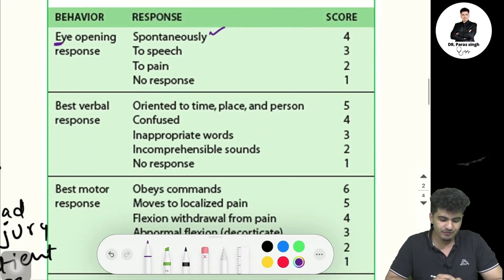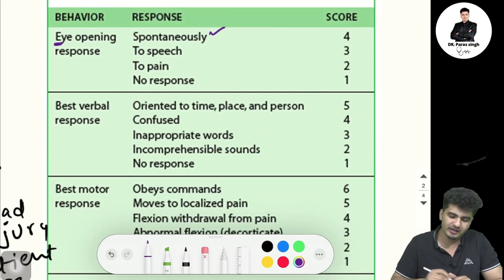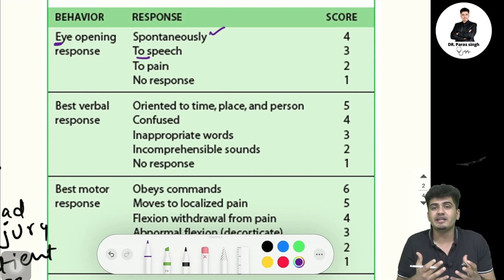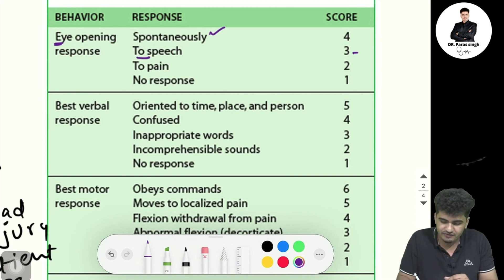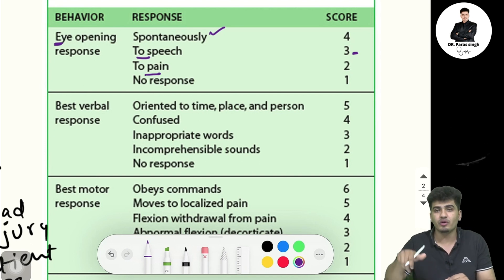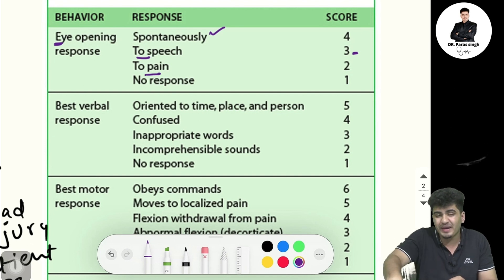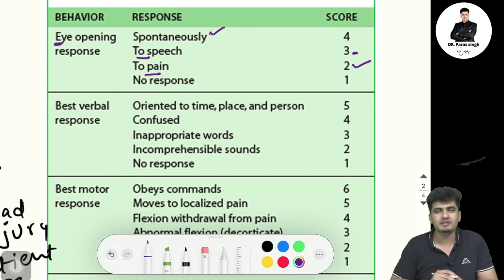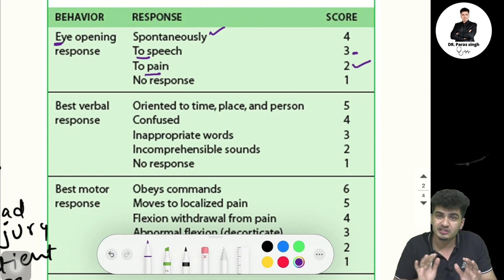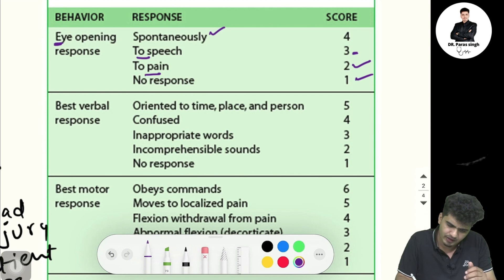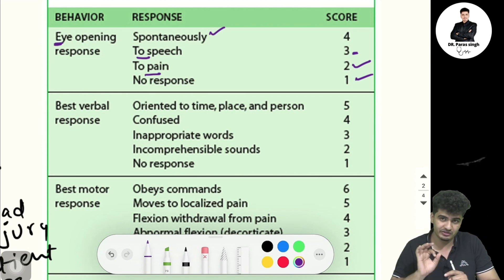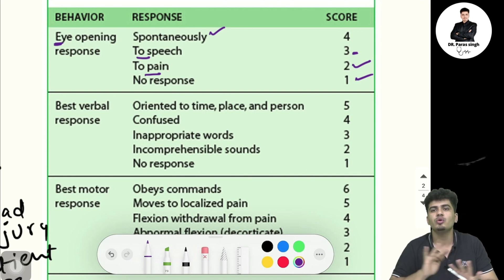For eye opening: spontaneously gives four marks, to speech gives three marks, to pain gives two marks, and no response at all gives one mark. So: spontaneously four, speech three, pain two, no response one.